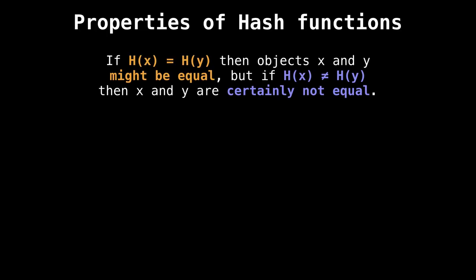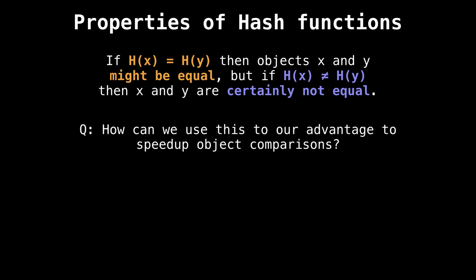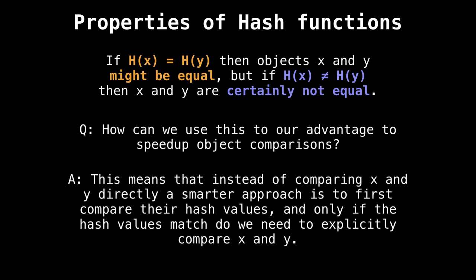Alright, something very important, very, very important, we need to talk about the properties of hash functions. So if we have a hash function and two objects, say x and y, and their hash values are equal, then those two objects might be equal. We don't know for sure. We have to explicitly check x against y. Because the hash function tells us that there was a collision right there. But if the hash functions are not equal, then x and y are certainly not equal. Here's a good question, how can we use this to our advantage to speed up object comparisons? The answer is that instead of comparing x and y directly, if we've already computed their hash values, then first, let's compare the hash values of x and y, instead of comparing x and y explicitly. And in this next example, you'll see why that's important.